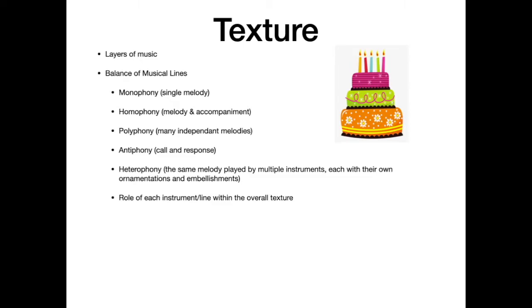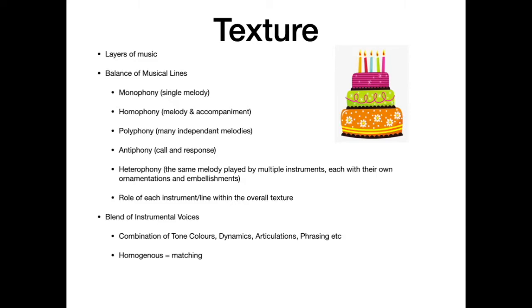Of course we want to talk about the role of each instrument within the overall texture — literally identifying what is playing the melody, what is in the middle ground on the harmony, and what's in the background on the accompaniment or rhythm. Going on from that, we talk about the blend of instrumental voices — the combination of tone colours, dynamics, articulations, and phrasing. Is it homogenous, meaning they match in dynamics, tone colour, and articulation? Or is it disparate, completely different — a mixture of different tone colours and dynamics? And always, you're referring back to the expressive outcome, since there's no reason people perform music unless to communicate something.